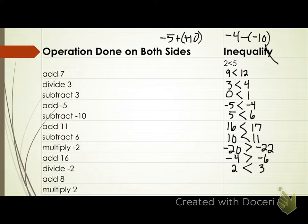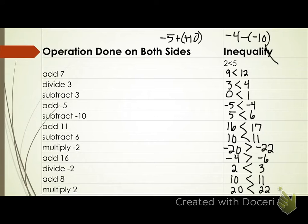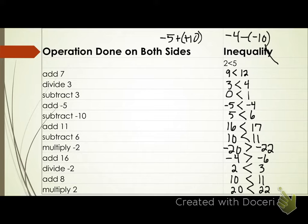Add eight: two plus eight is ten. Three plus eight is eleven. Symbol? Less than — stayed the same. Multiply by two: ten times two is twenty, eleven times two is twenty-two. Symbol? Less than. So what do we notice? When did my symbol change? When I multiplied by negative two, and when I divided by negative two. What do those two things have in common? They're negatives. So whenever I multiply or divide both sides of an inequality by a negative, I must flip my inequality symbol.